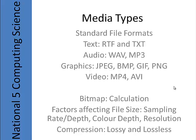Bitmaps are stored by remembering and storing the colour of every pixel in the image in a list. You need to be able to describe factors which affect the file size of all of these different media types. For audio, the things that affect the file size as well as the quality are the sampling rate and the sampling depth. The sampling rate is simply how often the computer measures the audio that it is trying to recreate in a digital format. The sampling depth is an indication of how much data it will store each time it takes a sample. If you increase either of these, it will increase the file size requirements for your audio file.